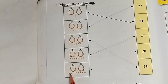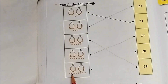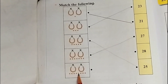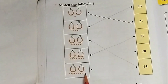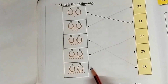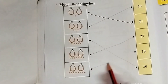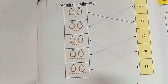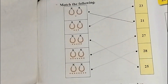Next is 10 units and 20 units. After 20: 21, 22, 23, 24, 25, 26, 27, 28. Now match this: 2, 8 = 28.